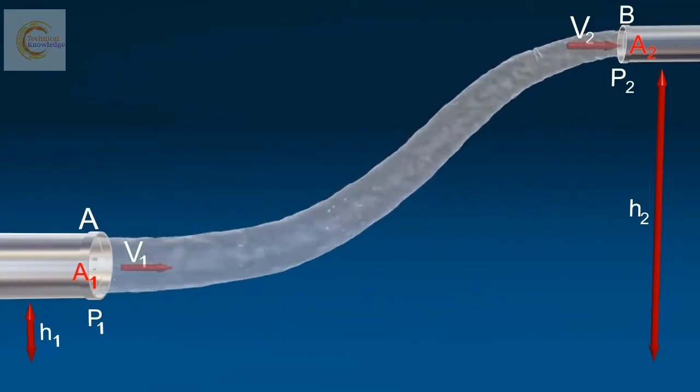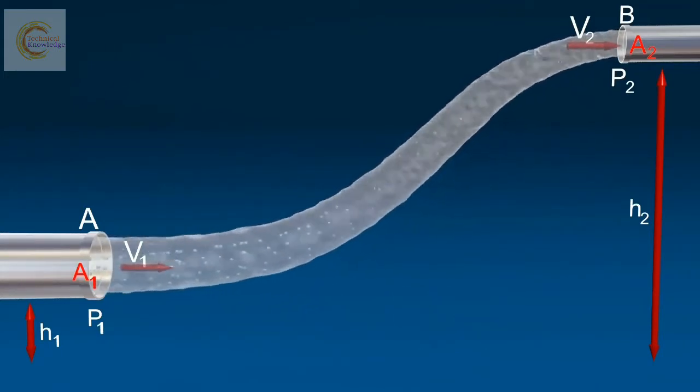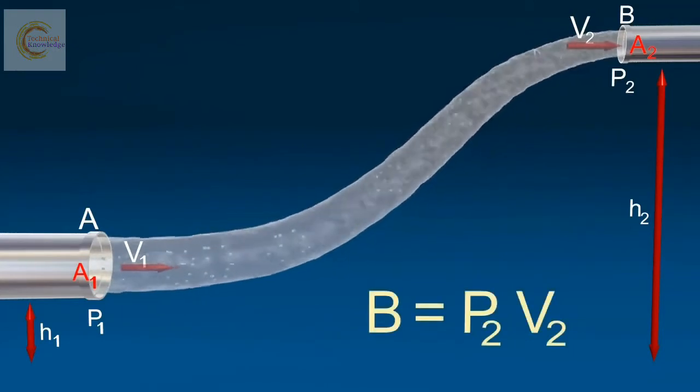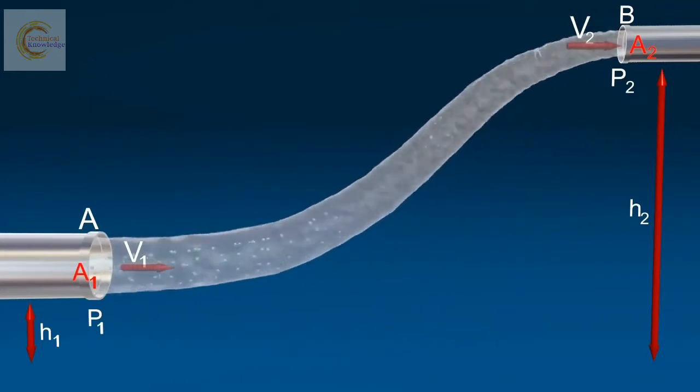Now, the work done per second on the liquid at section A and at section B. V1 equals V2 equals V. Equation of continuity.